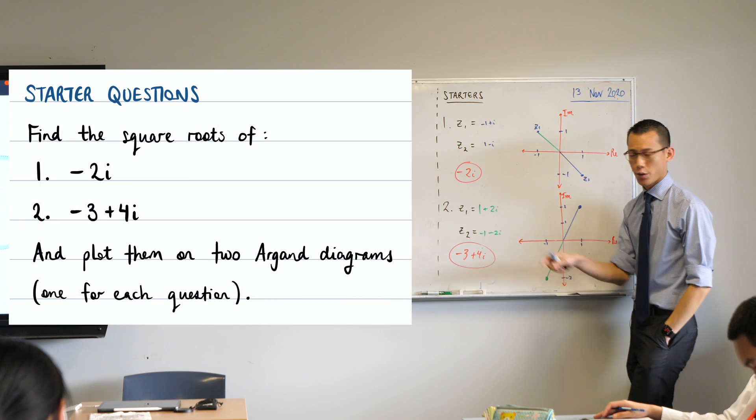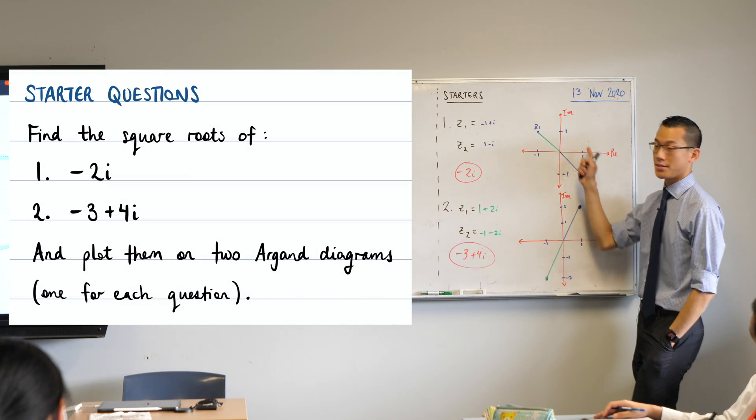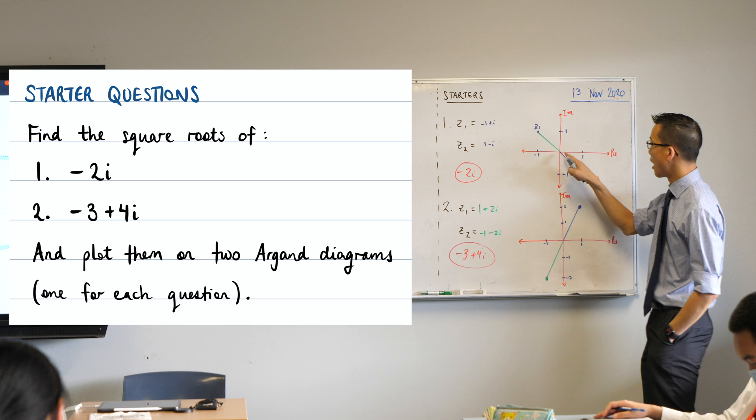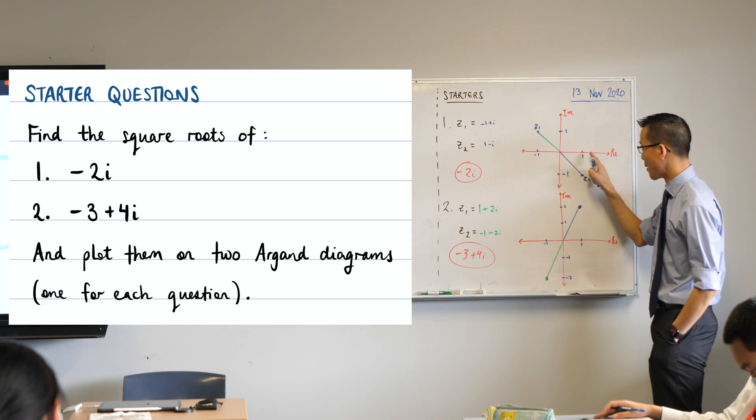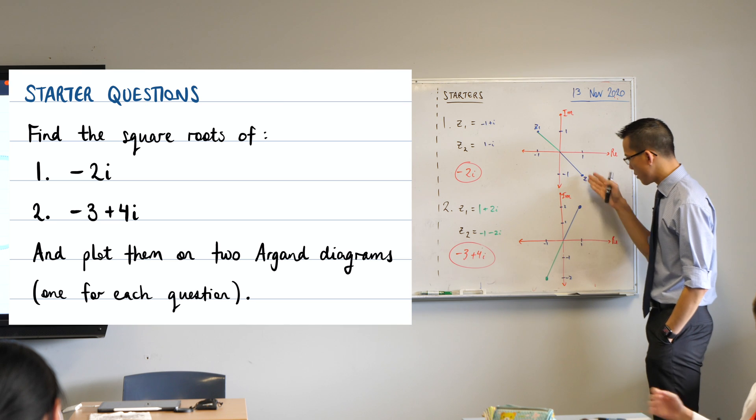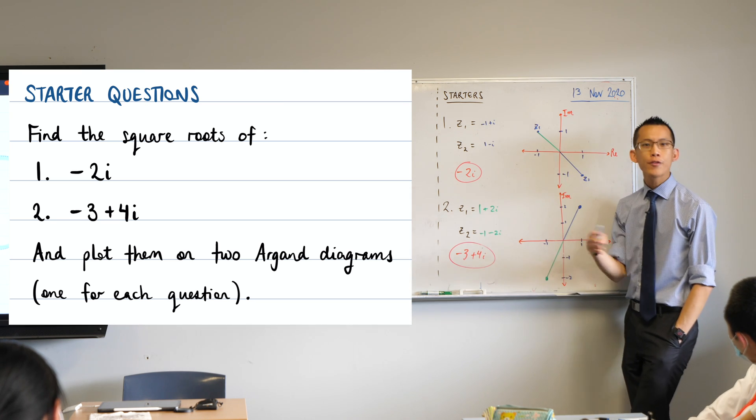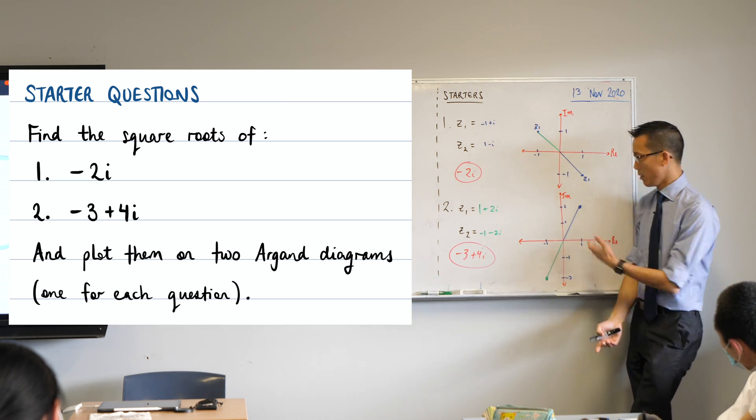First, we're working out the roots of minus 2i and you can see our pair of roots here. This one is minus 1 plus i and this one is 1 minus i.